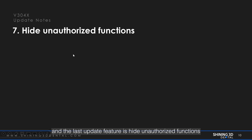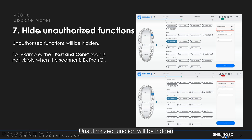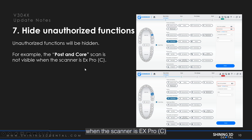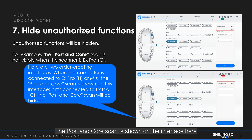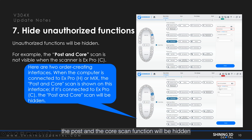The last update feature is hide unauthorized functions. Unauthorized functions will be hidden. For example, the post and core scan is not visible when the scanner is the EX Pro C. Here are two order creating interfaces. When the computer is connected to EX Pro H or MIX, the post and core scan is shown on the interface. But if it is connected to the EX Pro C, the post and core scan function will be hidden, as you can see here.